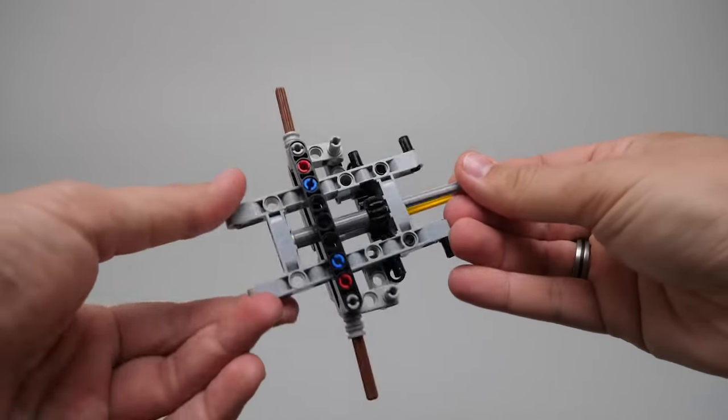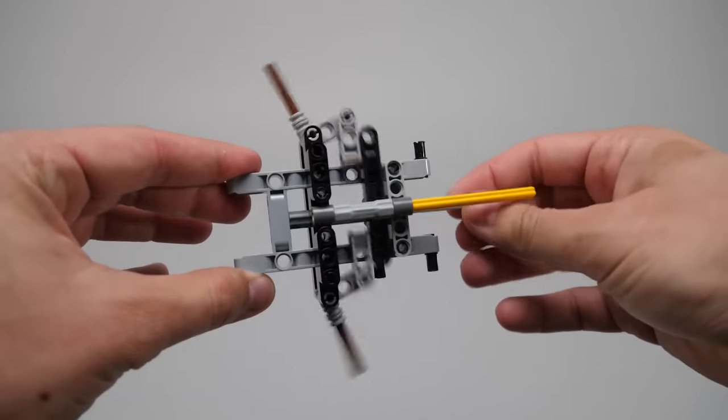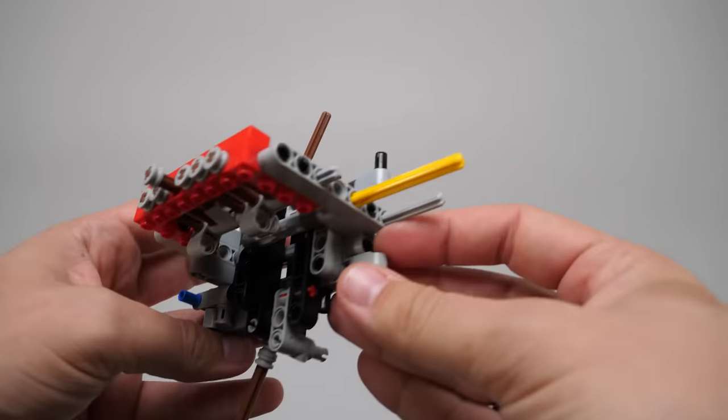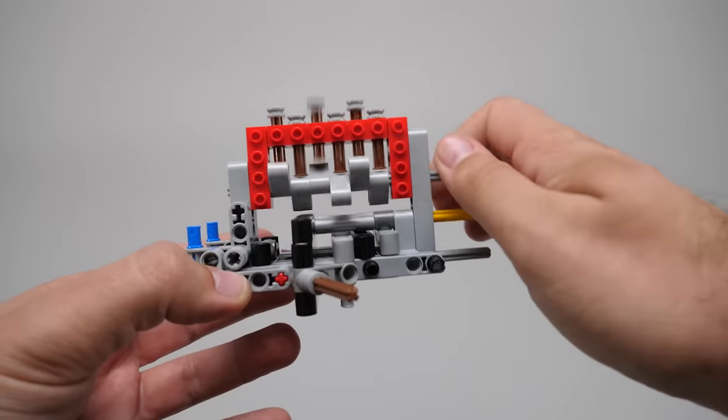Bag 3 begins with the front axle. It's a pretty conventional setup so far. Now this is something interesting, a studded Technic structure built sideways to support the pistons.